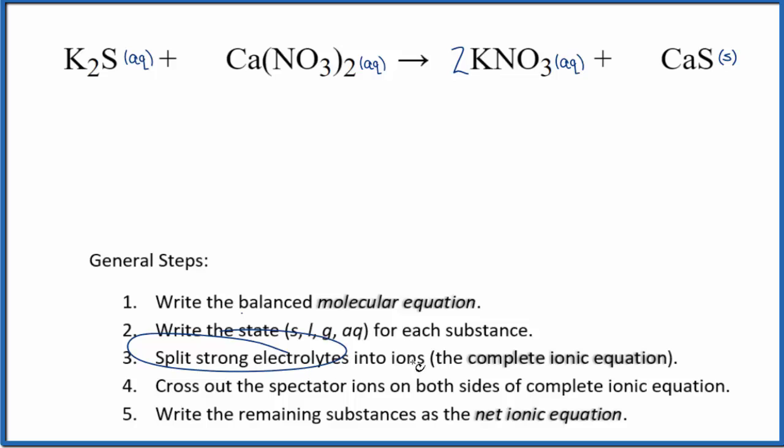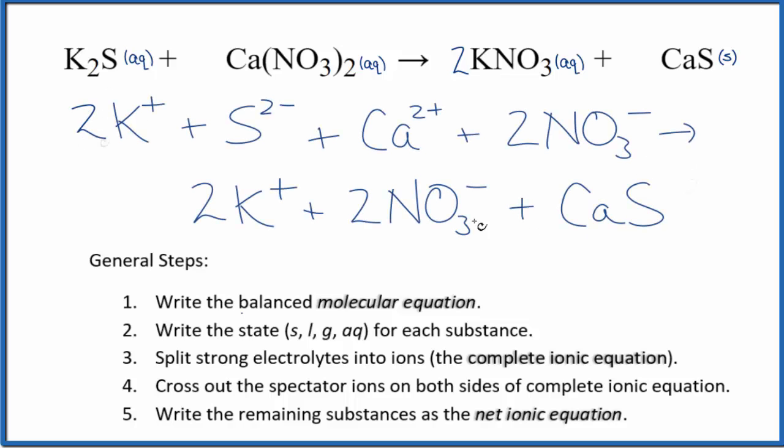Now we're going to split the strong electrolytes into ions, and that's going to give us the complete ionic equation. That looks like this. Note that we didn't split the solid here, the calcium sulfide apart, because in net ionic equations, we don't split solids apart. So this is the complete ionic equation.